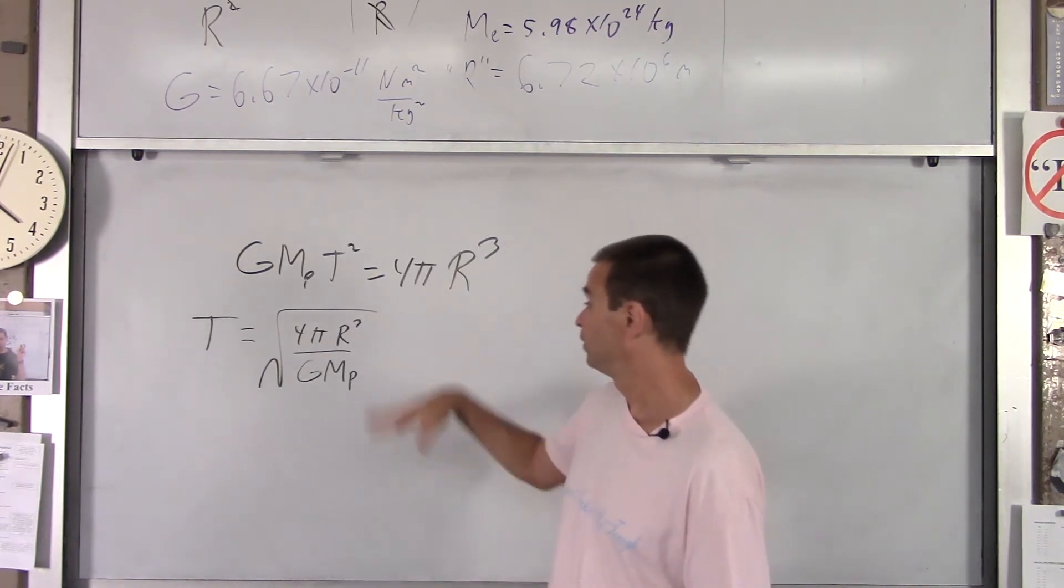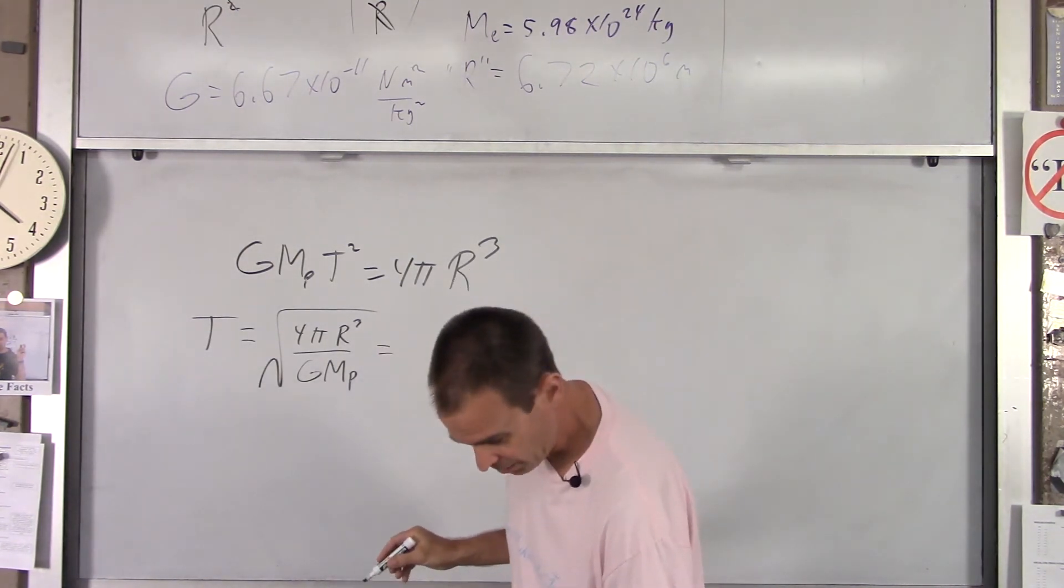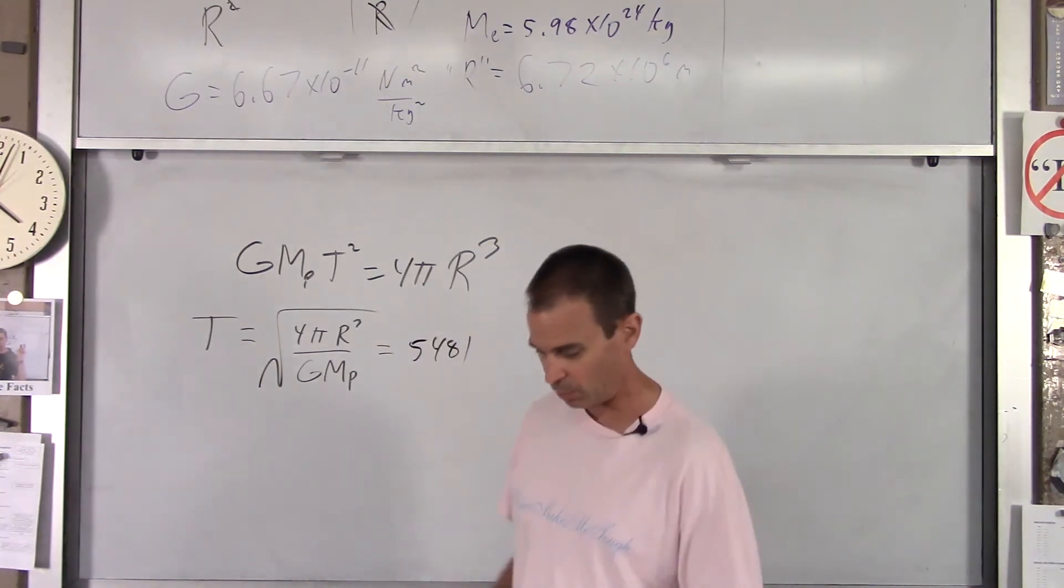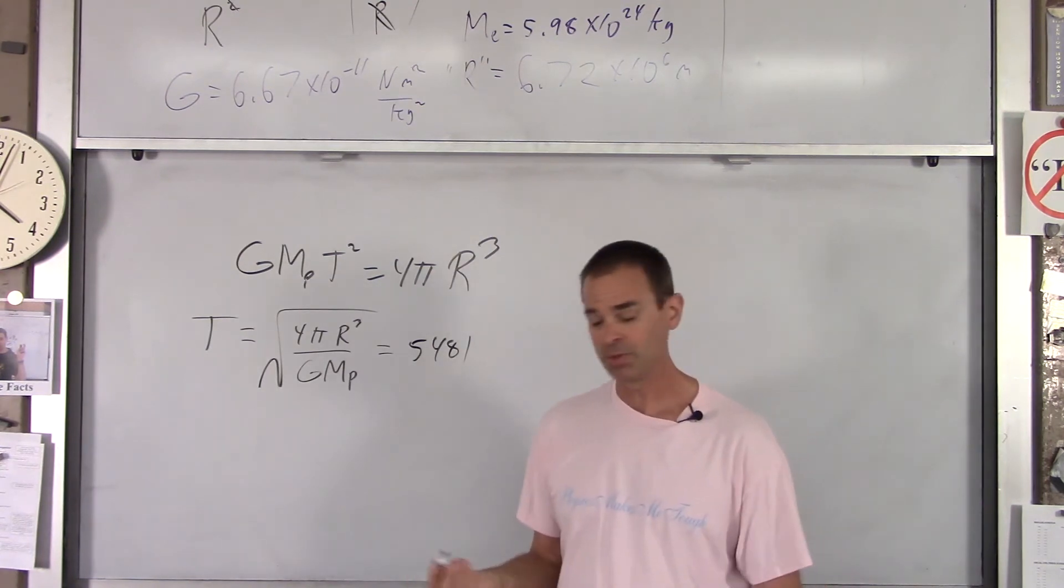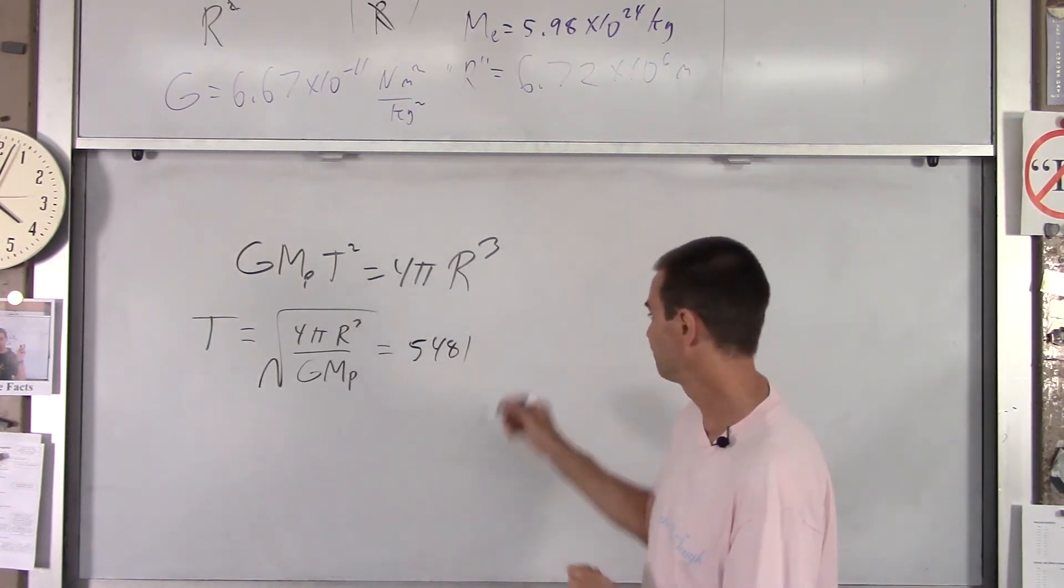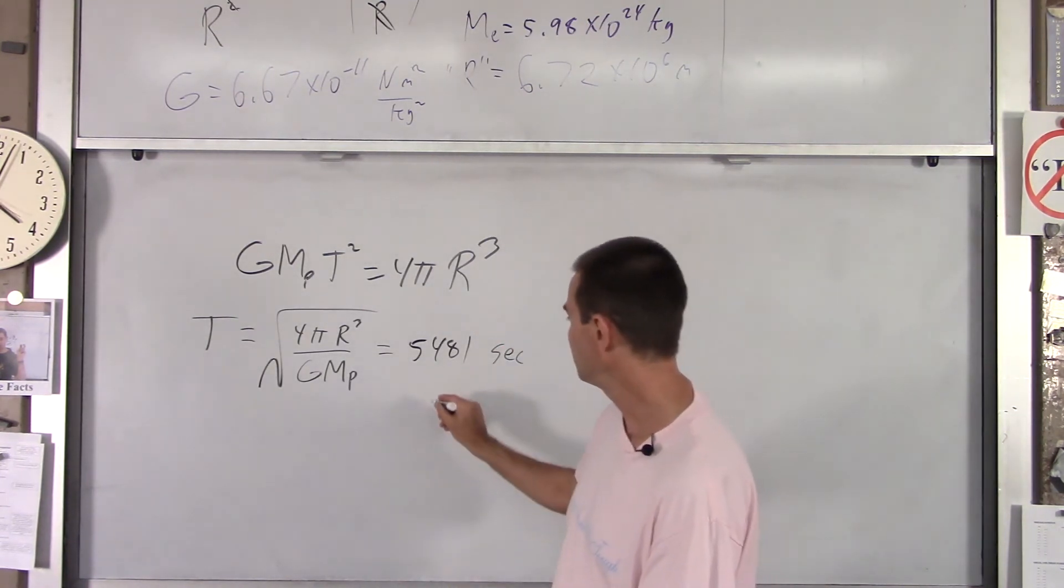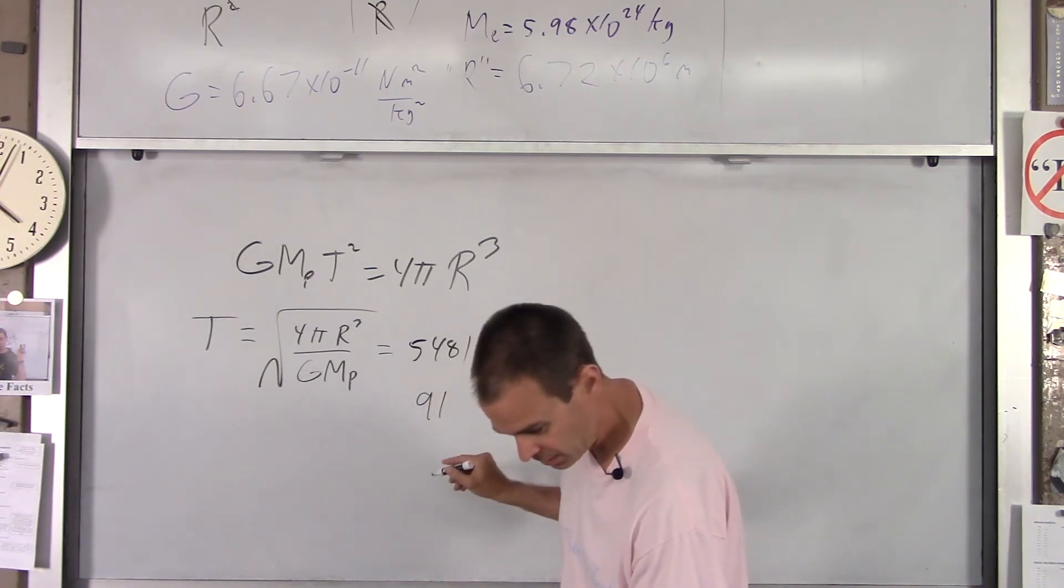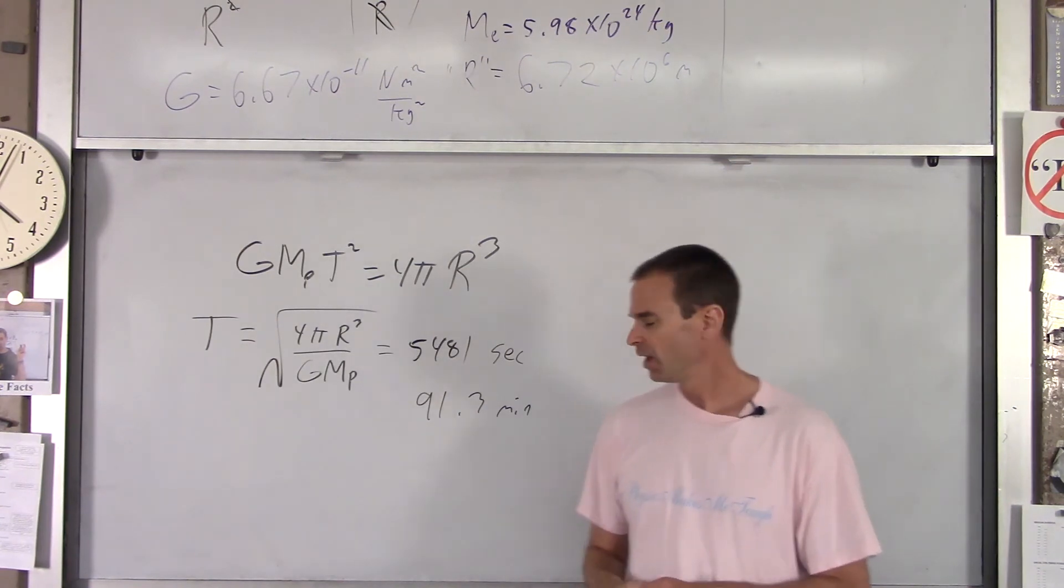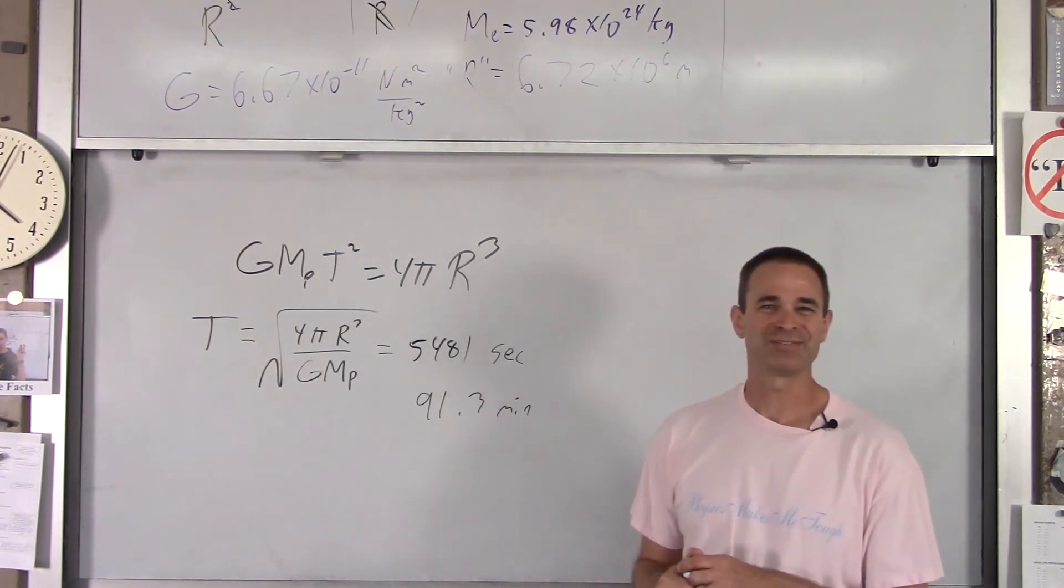Notice the mass you plug in here is the mass of whatever you're orbiting. So, for us, it would be the Earth. That would be the mass of the planet. I'll save you the calculation, but if you plug all the numbers in, you get about 5481. Now, what units would that be? Well, it's a metric system. It's kilograms, meters, and seconds. So, it takes the astronauts that many seconds to get around the Earth. If you divide that by 60, you get about 91.3 minutes. So, it's just over an hour and a half. So, by the way, they kind of see sunrise and sunset every hour and a half as they orbit the Earth.